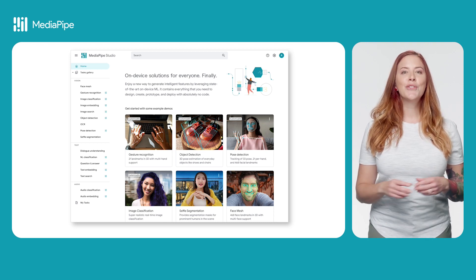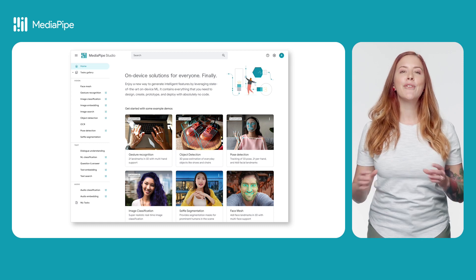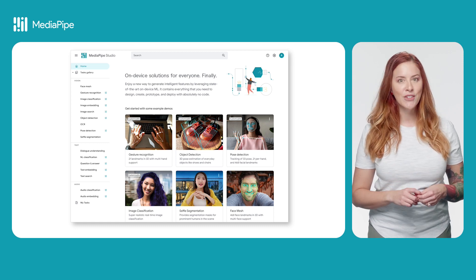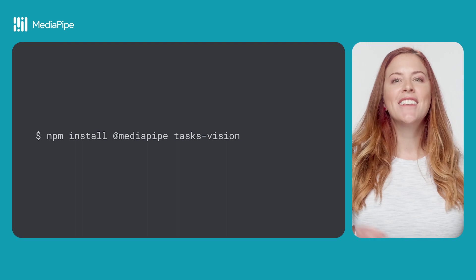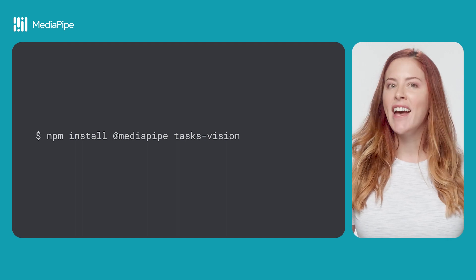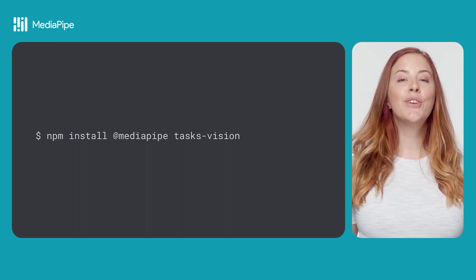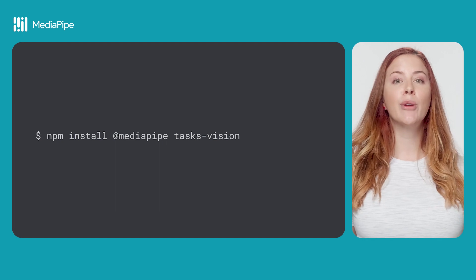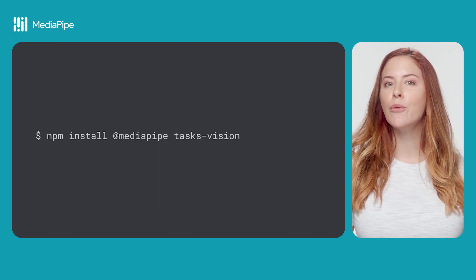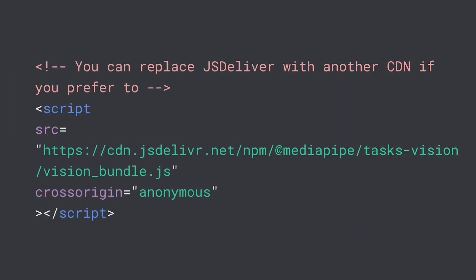You can also try out different configuration options so you can see everything the task can do. Now that you've chosen a model, install the task's vision package. You can download the package using NPM and use a JavaScript compilation tool like Webpack, or you can import the package using a CDN.